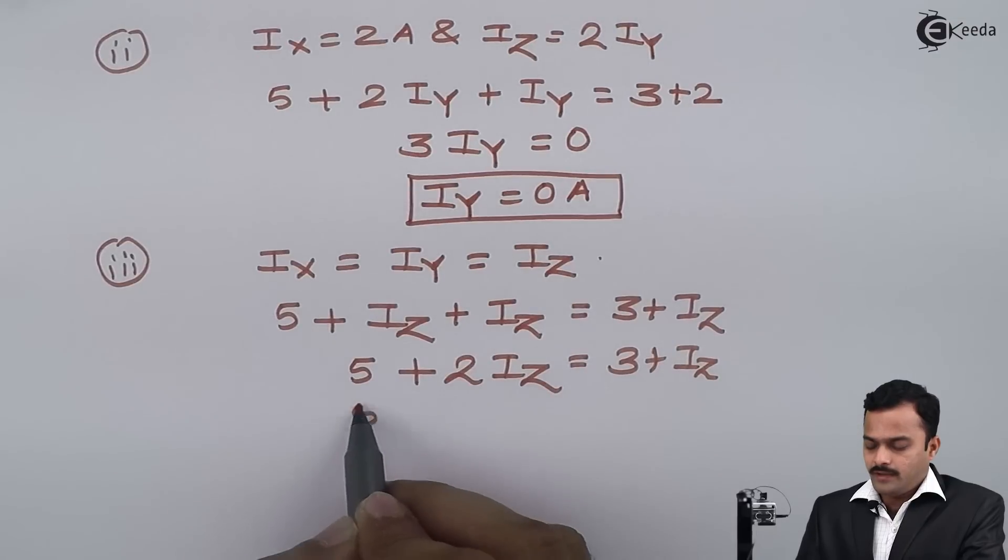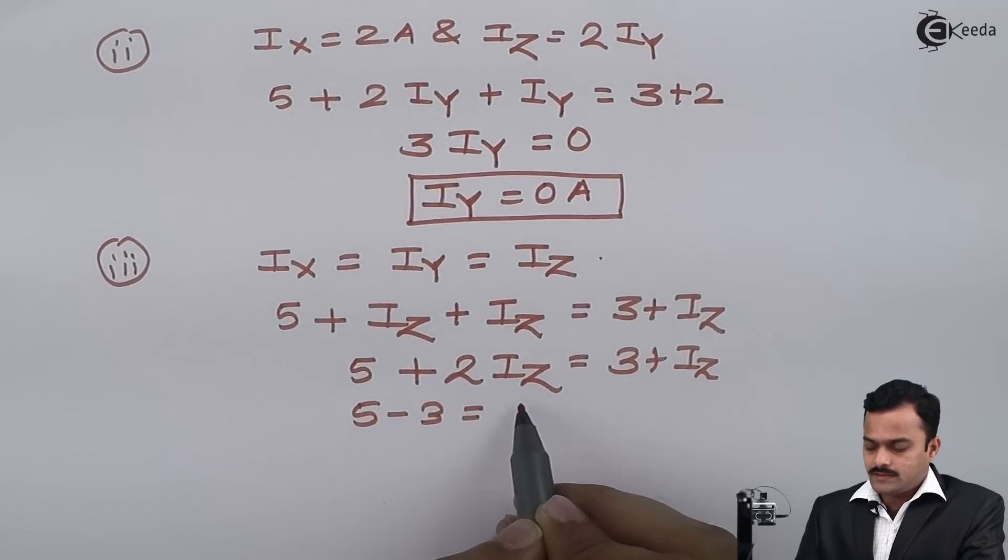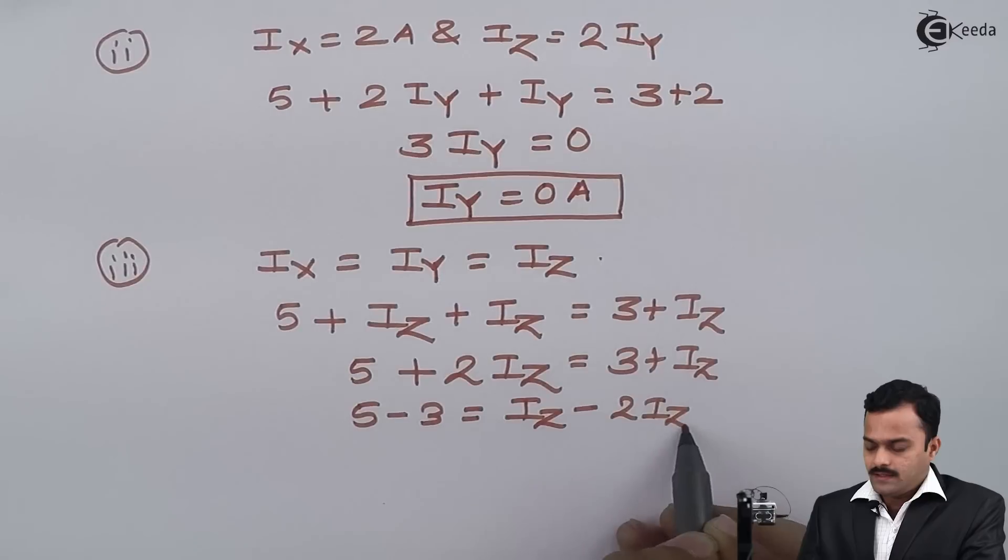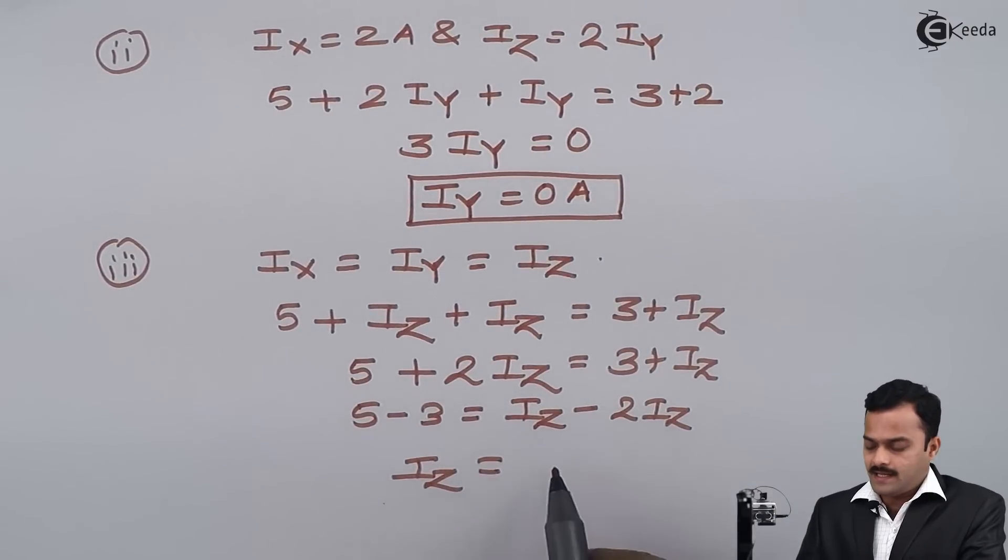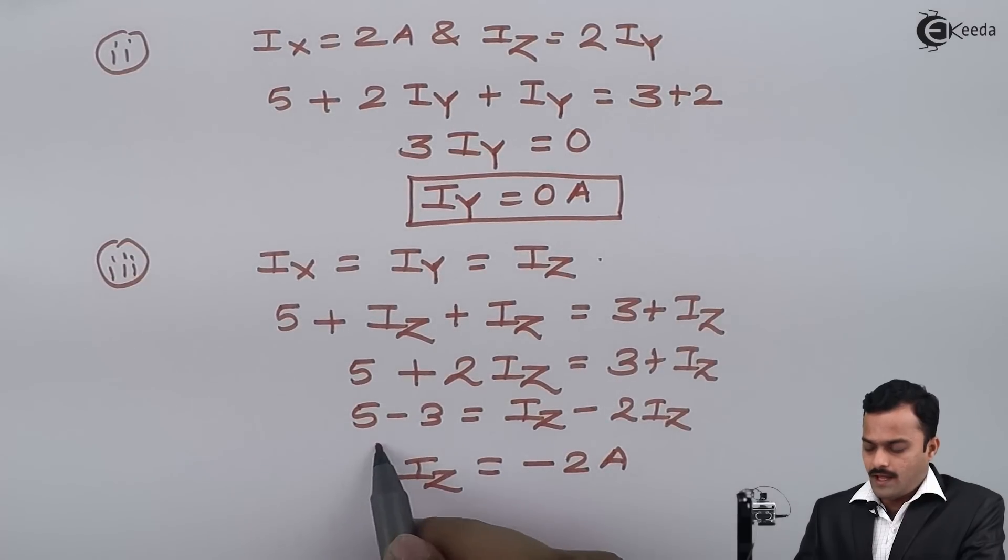So 5 minus 3 equals iz minus 2iz, and finally I will get iz as minus 2 ampere.